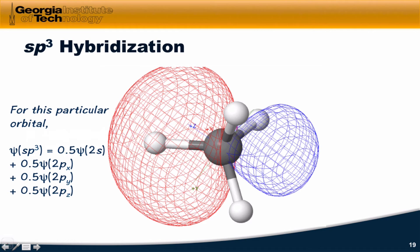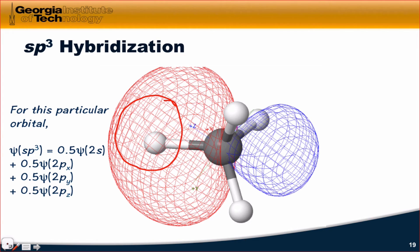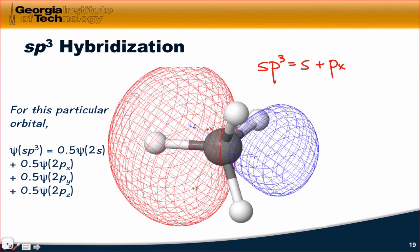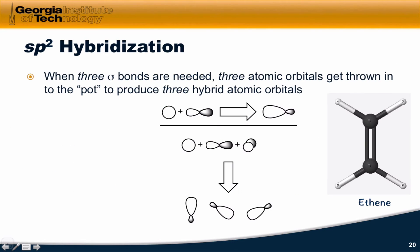Looking at actual calculation results, here's an SP3 hybrid in methane. The large red lobe is used for bonding with the hydrogen atom — there's really nice overlap between that orbital and the 1s orbital on hydrogen. Looking at the wave function for the SP3 hybrid: we've got a coefficient of 0.5 for the 2s orbital, a little bit of 2px, a little bit of 2py, and a little bit of 2pz all thrown into the mix. Essentially, the recipe for an SP3 hybrid is part s orbital, part px, part py, and part pz.